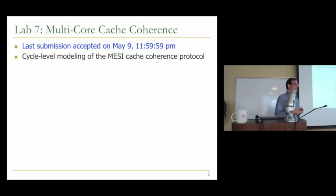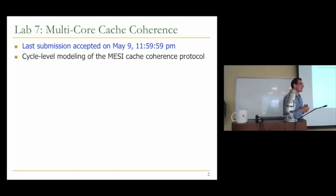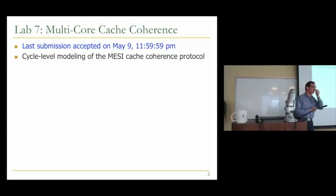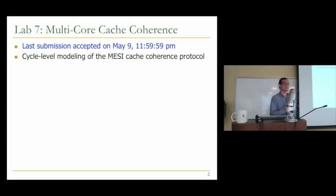Who has started? Please get started. It's due on May 9th, and that's the latest time we will accept submissions. There is no extra credit for this lab, though you could optimize the protocol — for example, you could do cache-to-cache transfers. But I wouldn't recommend starting that way. Just implement what is given, because even that will take some time. Cache coherence is one of the most complicated parts of a multi-core processor, because there are a lot of race conditions you will need to handle. You don't want two cache blocks to be in different states in different caches.